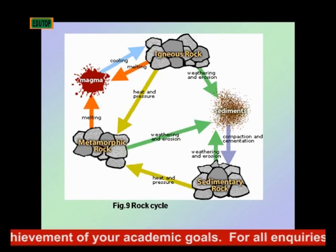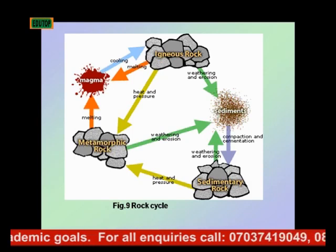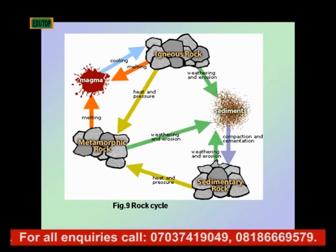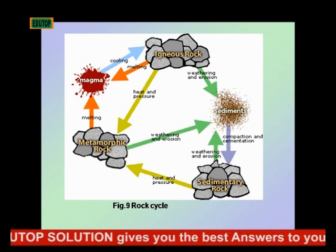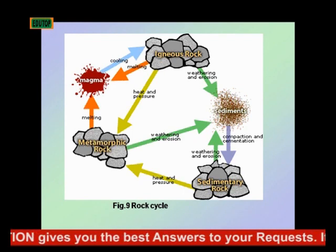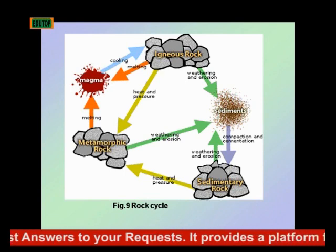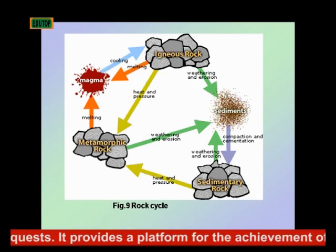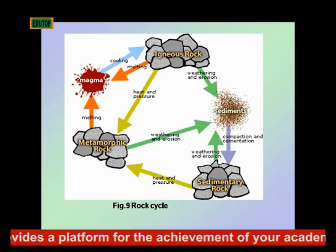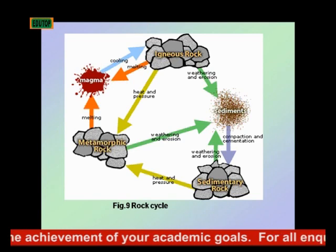For instance, a metamorphic rock may be exposed to intense temperature and it undergoes melting, giving rise to what is known as magma. And when this magma comes up to the surface of the earth — it could be forcefully or gently, depending on the internal processes going on within the earth — it cools and solidifies to form igneous rock.